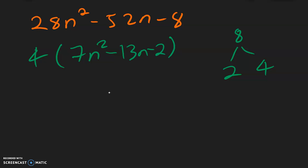And now we have something that we can factor the inside. So let's break up the 7. 1 times 7 is 7. And then for the 2, we can do 1 times 2. And cross multiply. 1 times 2 is 2. 7 times 1 is 7. The 7 needs to be negative because that's the bigger number.